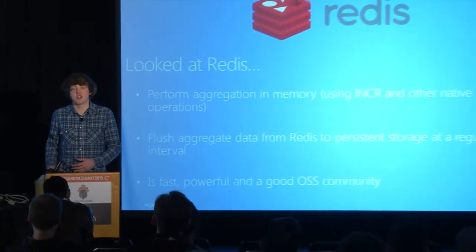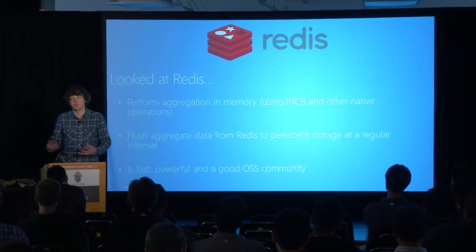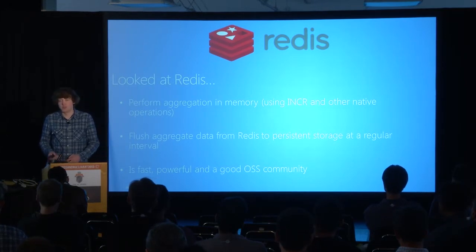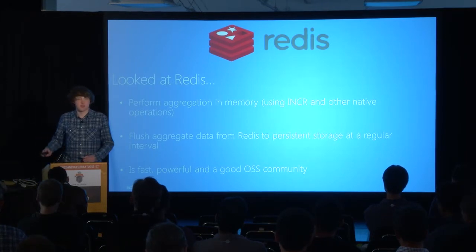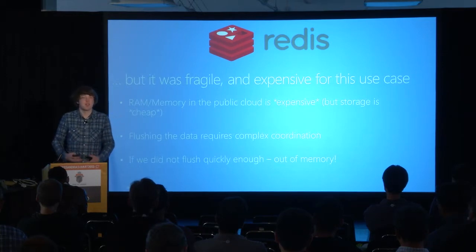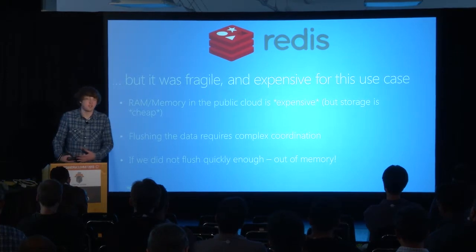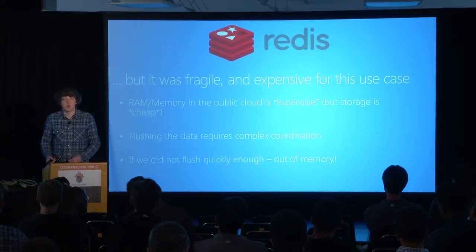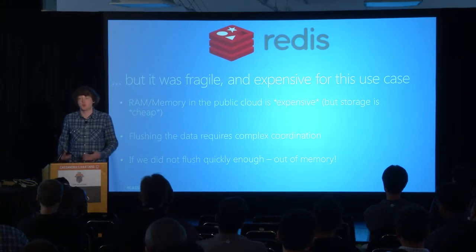When we first started, we looked at Redis as a potential solution. We were thinking we could do in-memory aggregation using the complex operations that Redis supports — incrementing or adding sets in memory for our hot data as it flows in, then flush this aggregate data to a more persistent store like SQL or a NoSQL store for visualization and analytics. The problem, even though Redis is fast and powerful with a great open source community, is that it ends up being very fragile and expensive. Having this system where we're aggregating data in memory then flushing requires complex coordination across many machines, and it also requires us to constantly support this flushing, otherwise we just can't take any more data because we will run out of memory.